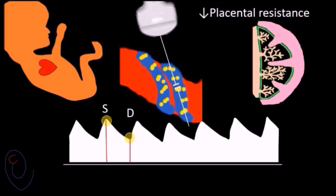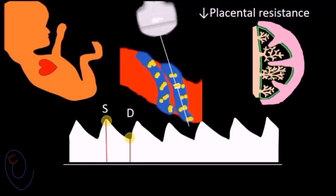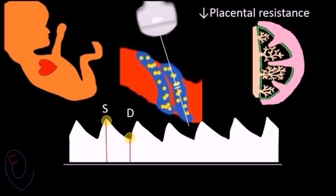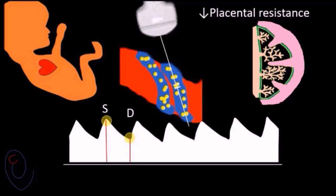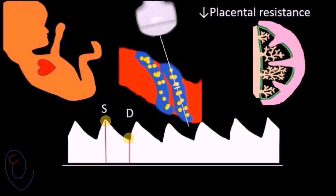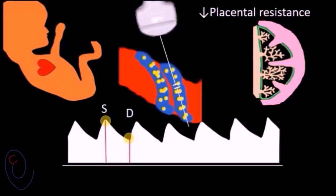As you can see, the end diastolic velocity is high — in this example it's nearly one half of the systolic velocity — and this is due to low vascular resistance in the healthy placenta. From these values, S and D, we measure the Doppler indices.